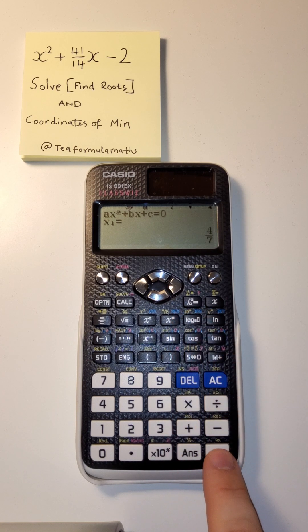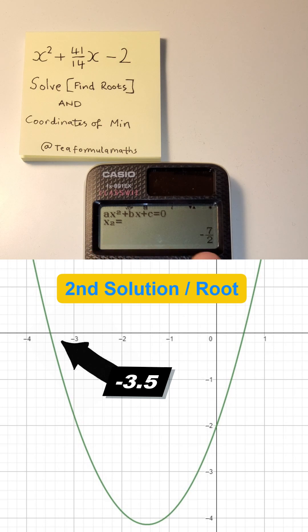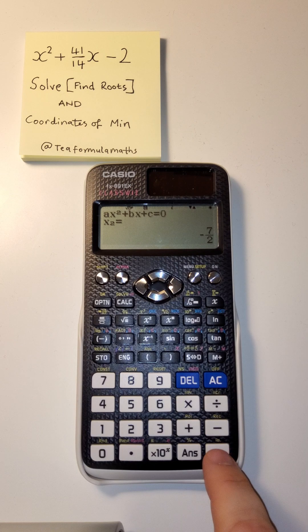When we press equals again, we get x2, which is negative seven over two. Let's see how big that one is—negative 3.5, still useful.